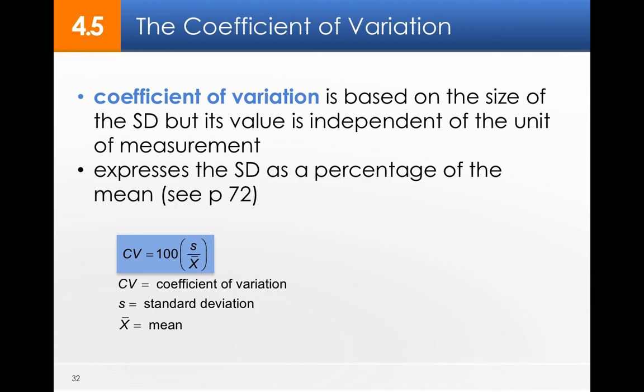So it expresses standard deviation as a percentage of the mean. So it's literally CV stands for coefficient of variation. It's 100 times the standard deviation divided by x bar. That's a pretty simple one.